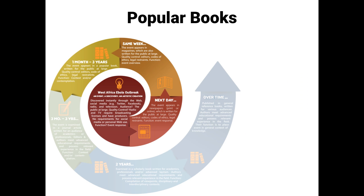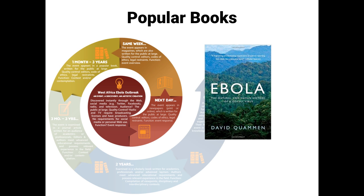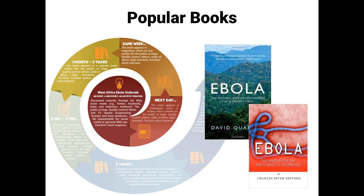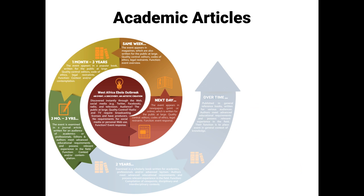Anywhere from a month to three years later, an even lengthier popular book might appear. Popular books provide further context and reflection about the event. These sources do have authority, but they are usually written for a more general, non-academic audience.